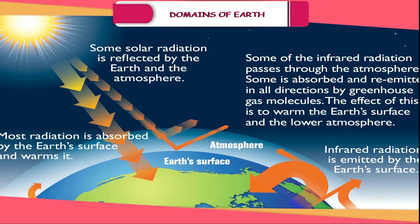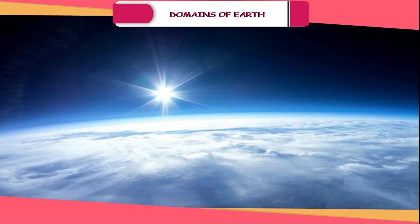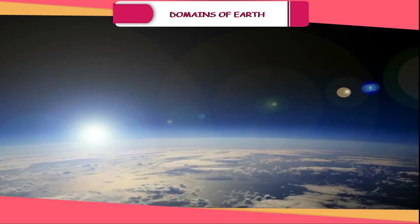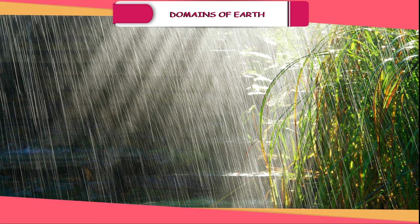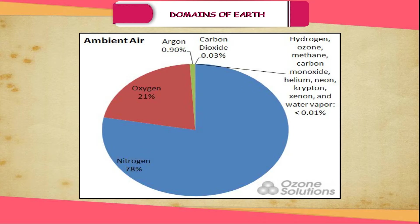These atmospheric layers prevent the escape of heat from the Earth. They also do not allow harmful ultraviolet rays to reach the Earth, and they keep the Earth warm during nights and in winters. Cloud formation and rainfall on Earth's surface take place in the troposphere.